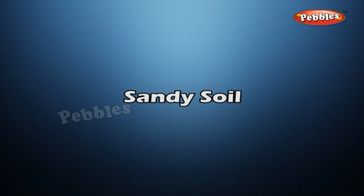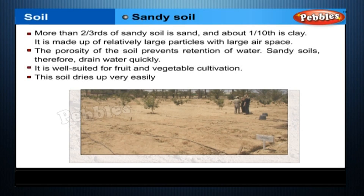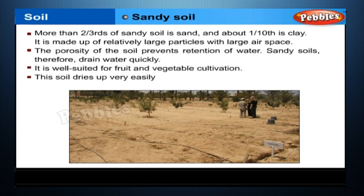Sandy soil: More than two-thirds of sandy soil is sand and about one-third is clay. It is made up of relatively large particles with large air spaces. The porosity of the soil prevents retention of water. Sandy soils, therefore, drain water quickly. It is well suited for fruit and vegetable cultivation. The soil dries up very easily.